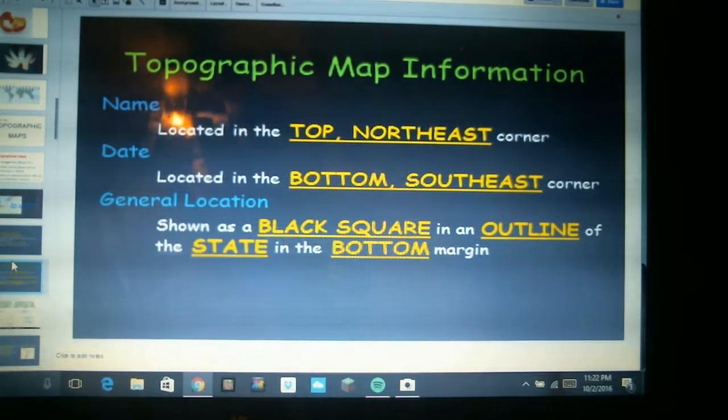Each topographical map is going to have certain features around the sides. When different companies make these topographical maps they might place them in slightly different locations, but we're going to be looking at maps made by the USGS. That's the official map making organization of the US government. They put the name of the area being mapped in the top northeast corner of the map, that would be the top right corner. The date that it's made is in the bottom southeast corner, that's the bottom right hand corner.